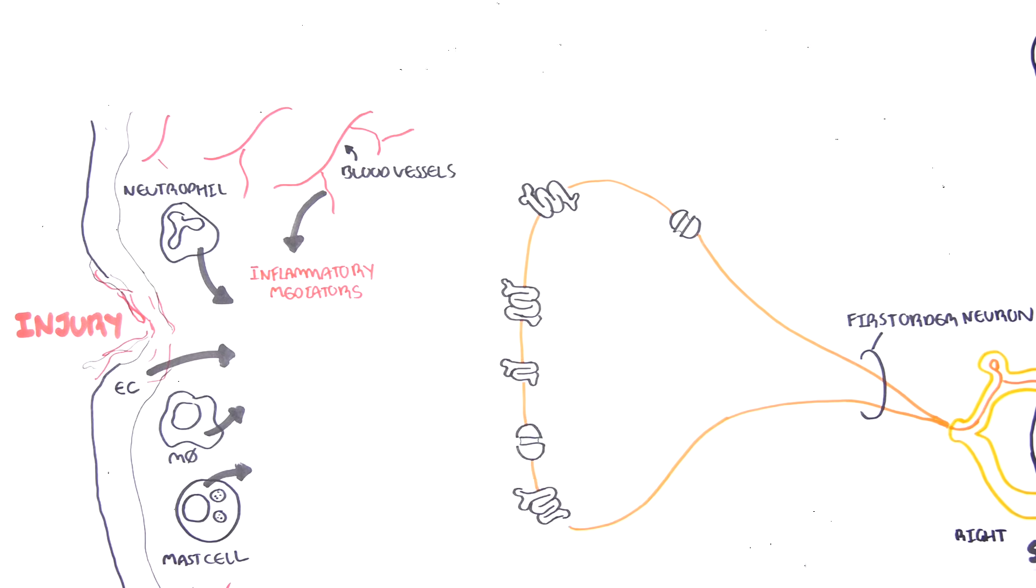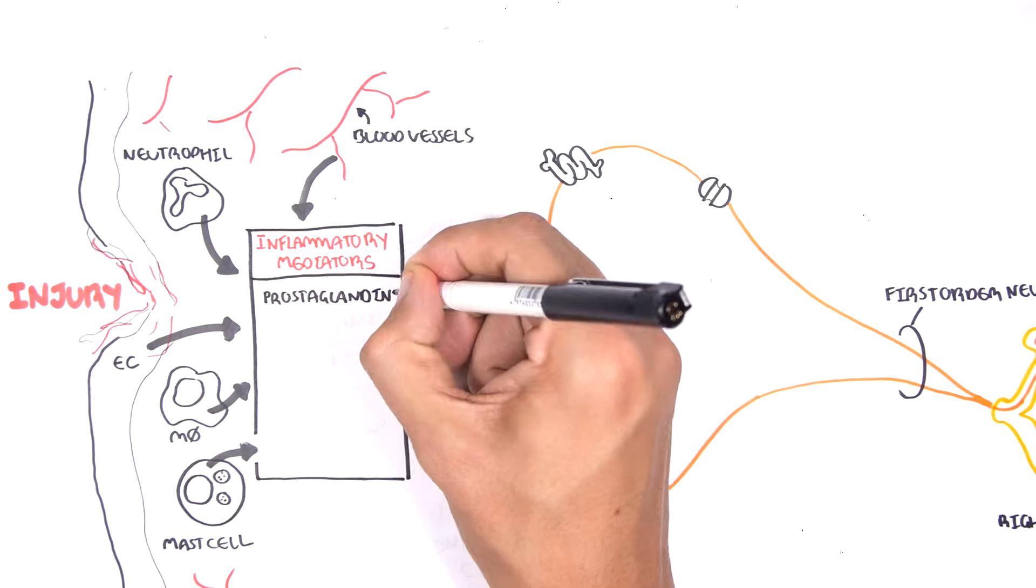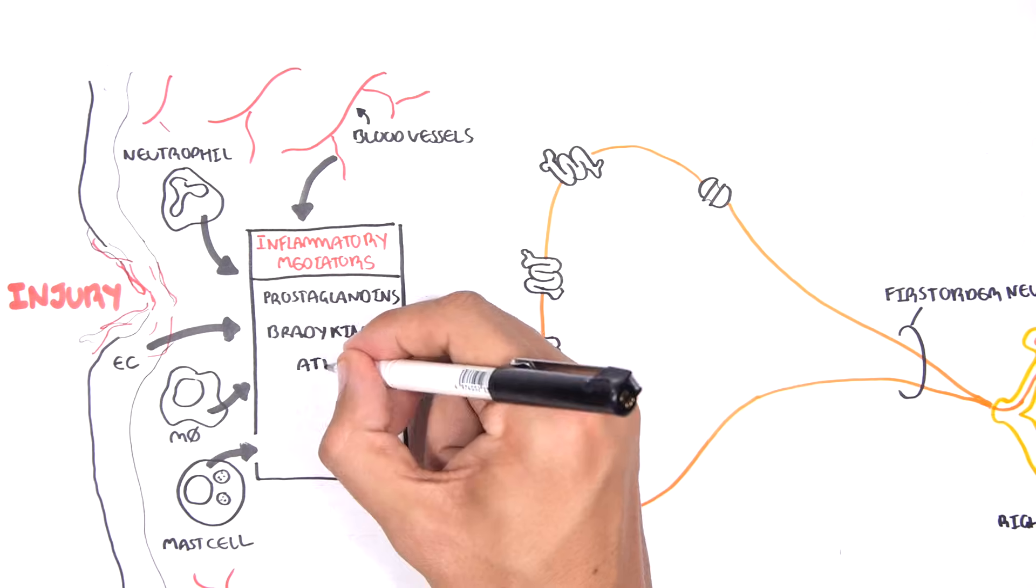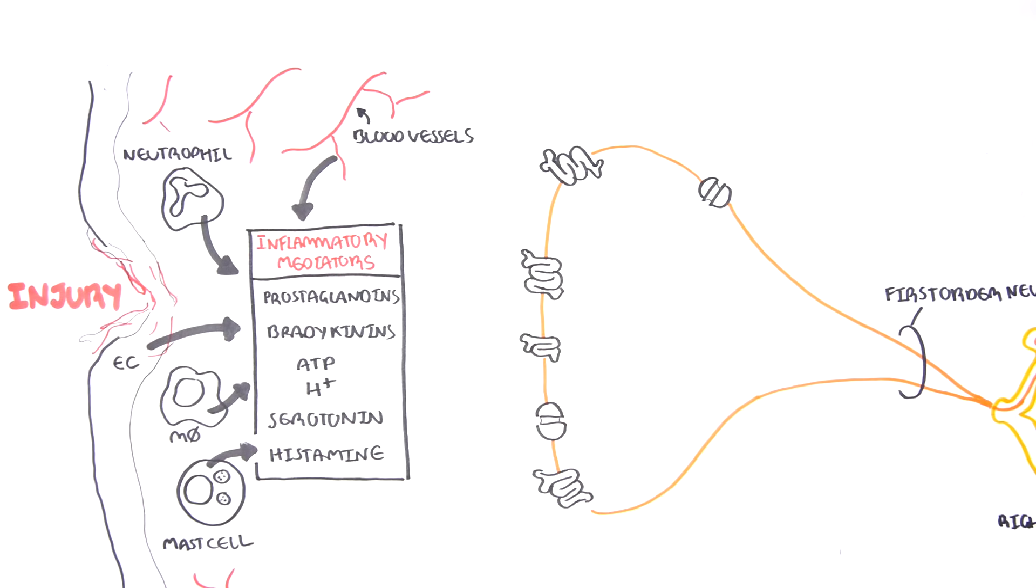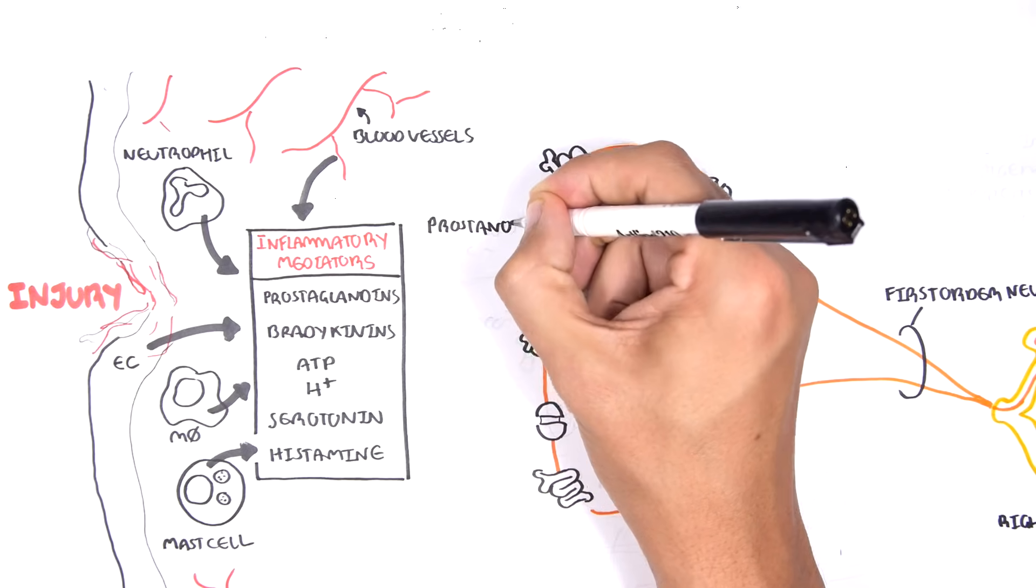These are things such as prostaglandins, bradykinin, ATP, hydrogen ions, as well as serotonin and histamine, and there are many more. All these mediators will stimulate receptors on these sensory nerve fibers.